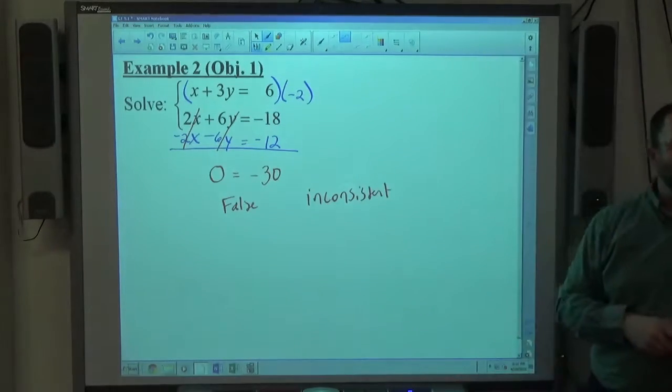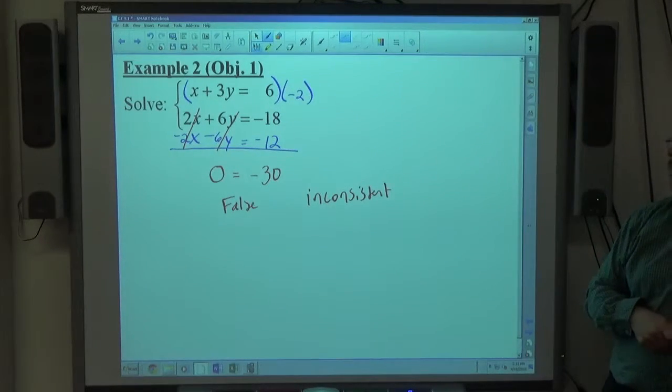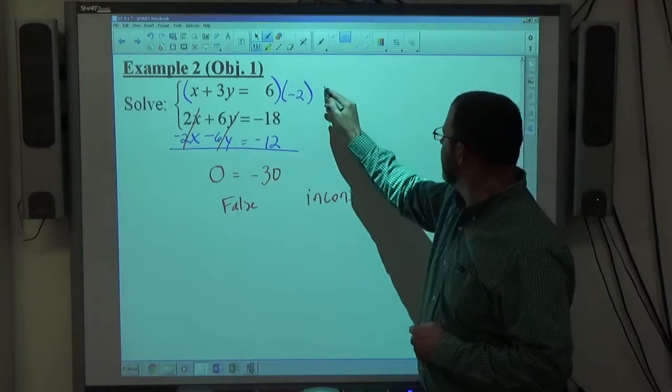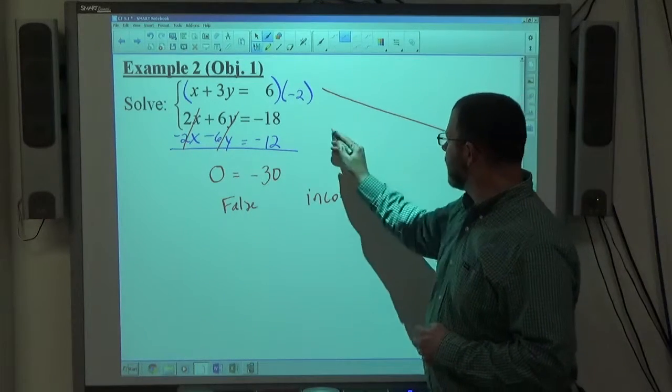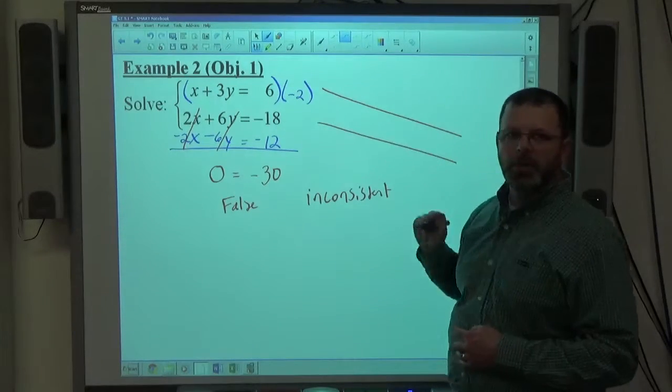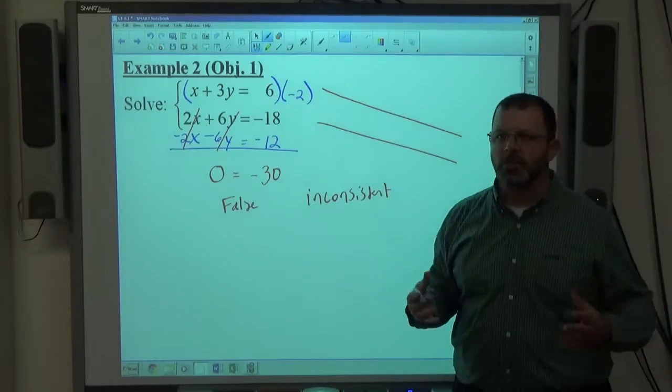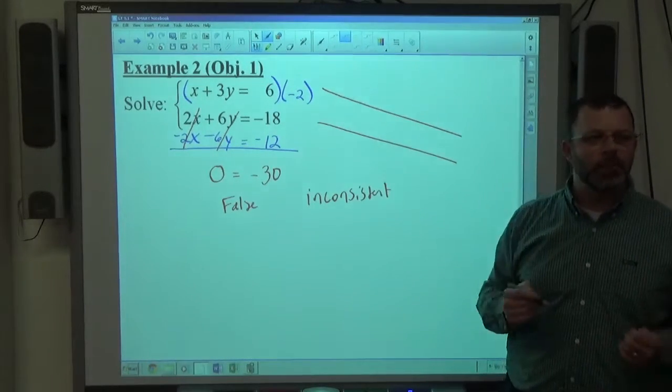If I were graphing this, these would be parallel lines. x plus 3y equals 6 would be kind of like this. 2x plus 6y equals negative 18 would be kind of like this. Parallel to each other. They don't intersect. Actually, there's no answer, no ordered pair representing their point of intersection, because they don't.